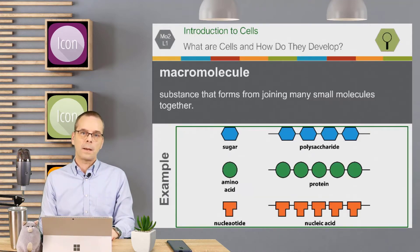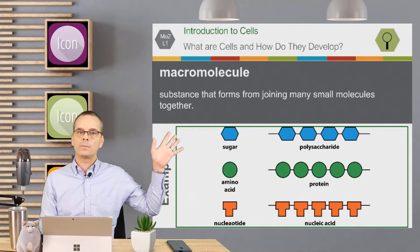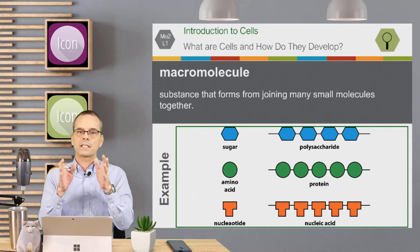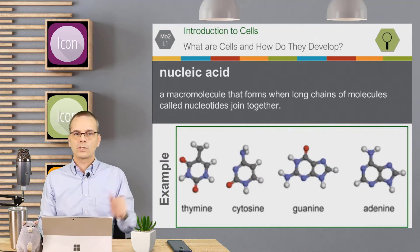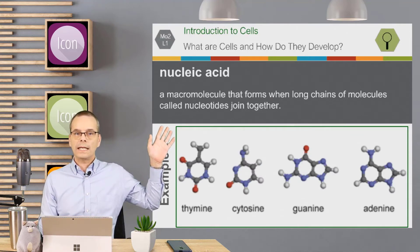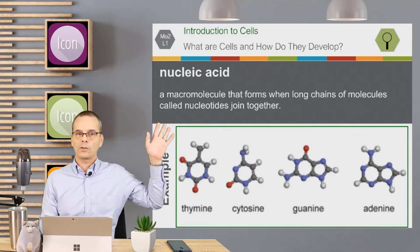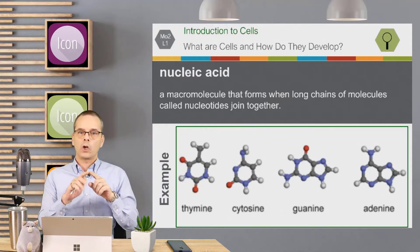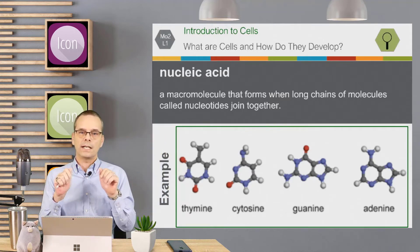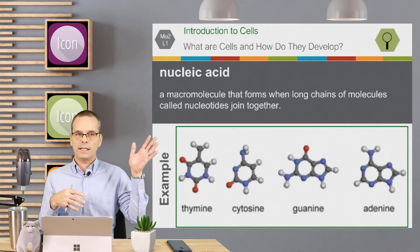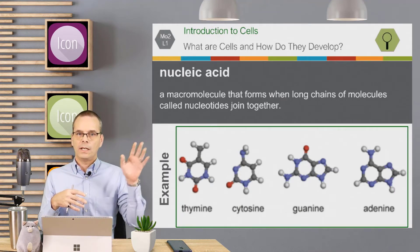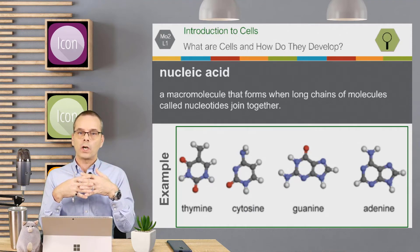The next word is macromolecule. A macromolecule is a substance that forms by joining many small molecules together. You also have nucleic acid. Nucleic acid is a macromolecule that forms when a long chain of molecules called nucleotides all join together.